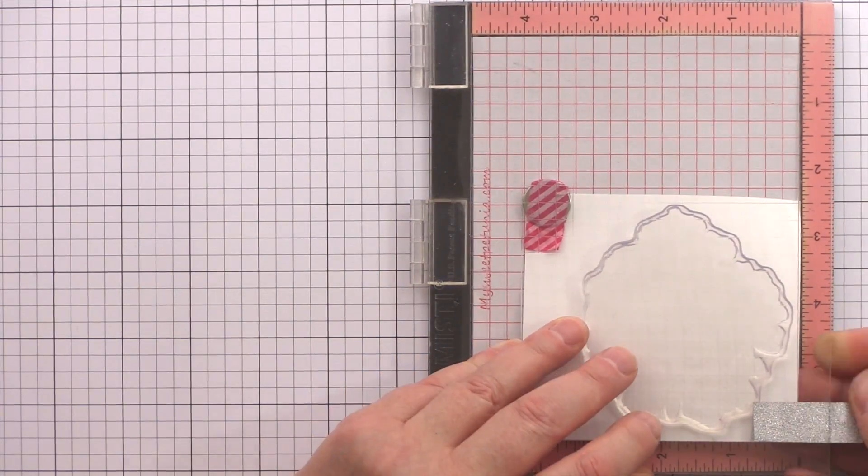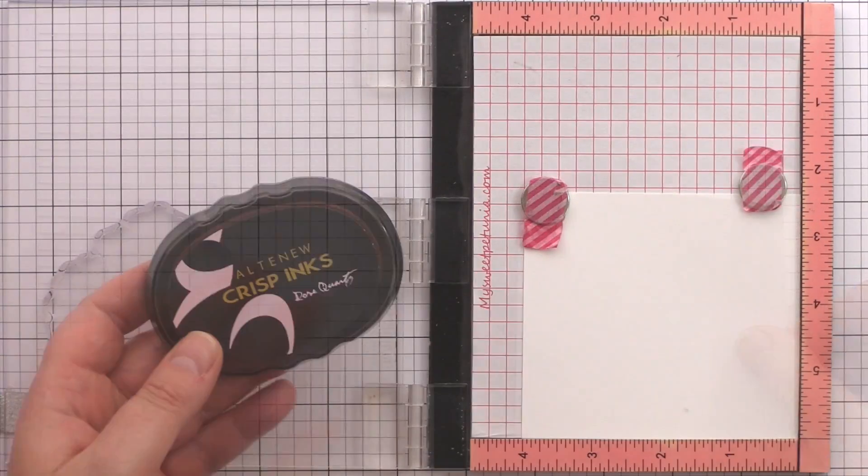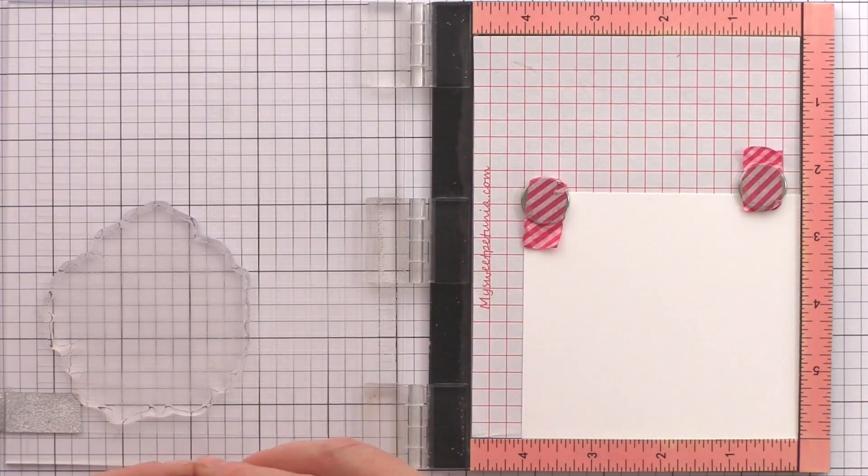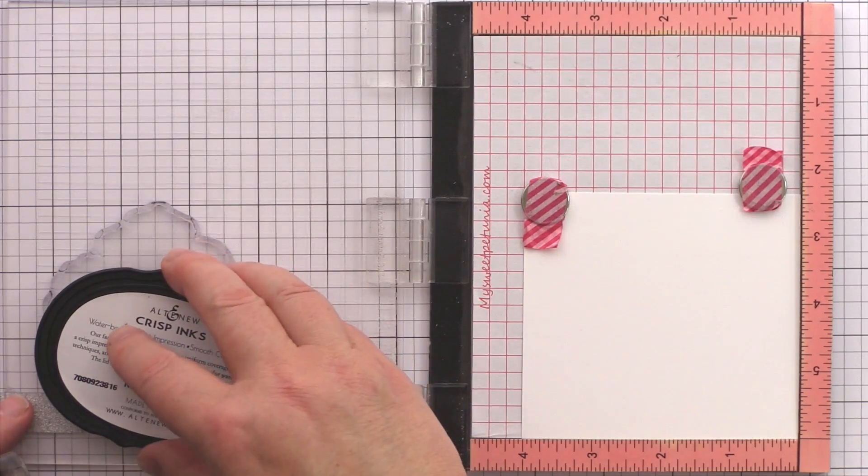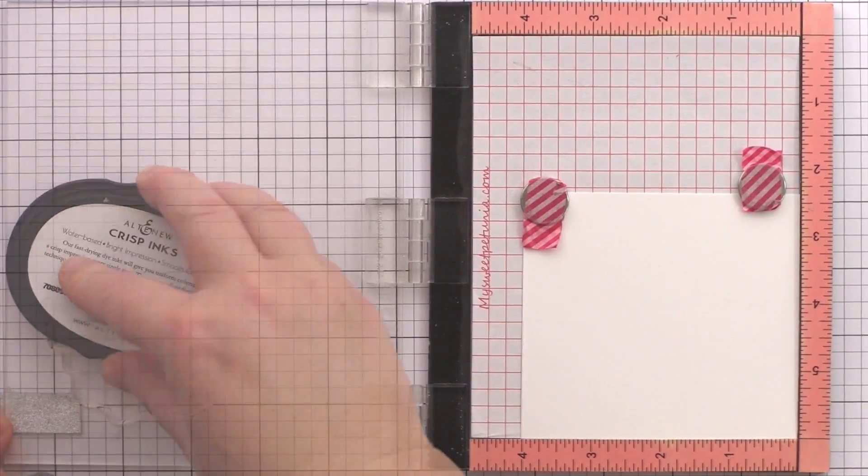I'm using the Mini MISTI today and I will be stamping the flower and leaves several times. This is one of the advantages of having a stamp positioner as once you've aligned your stamps correctly you can stamp multiples really quickly and easily.